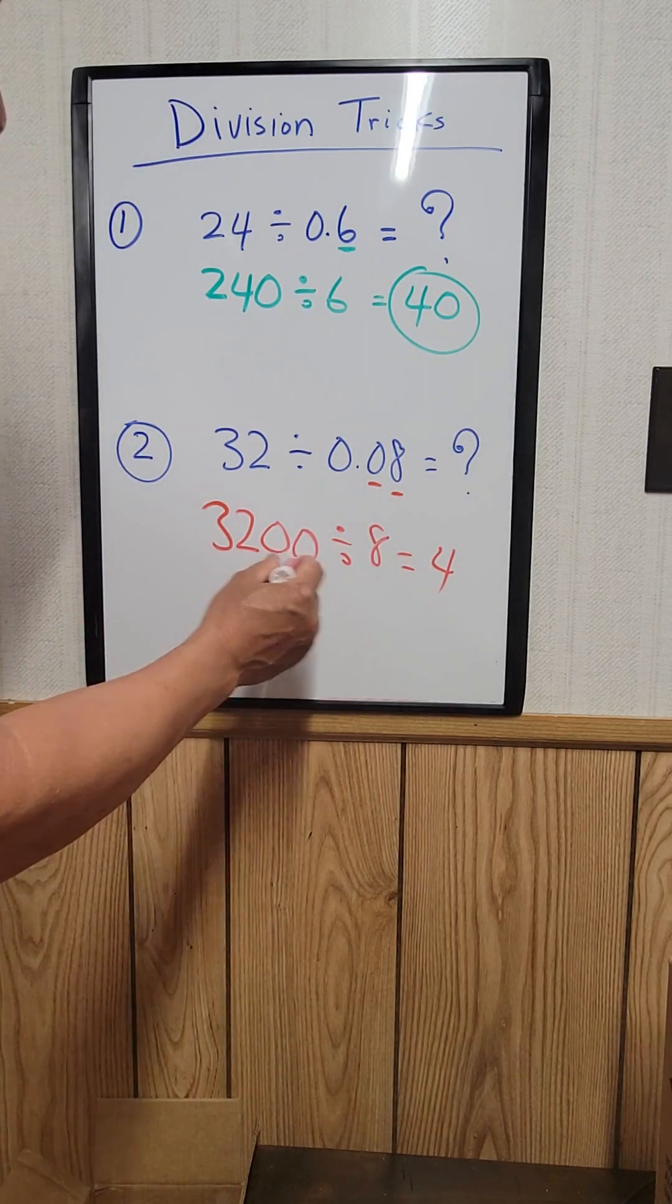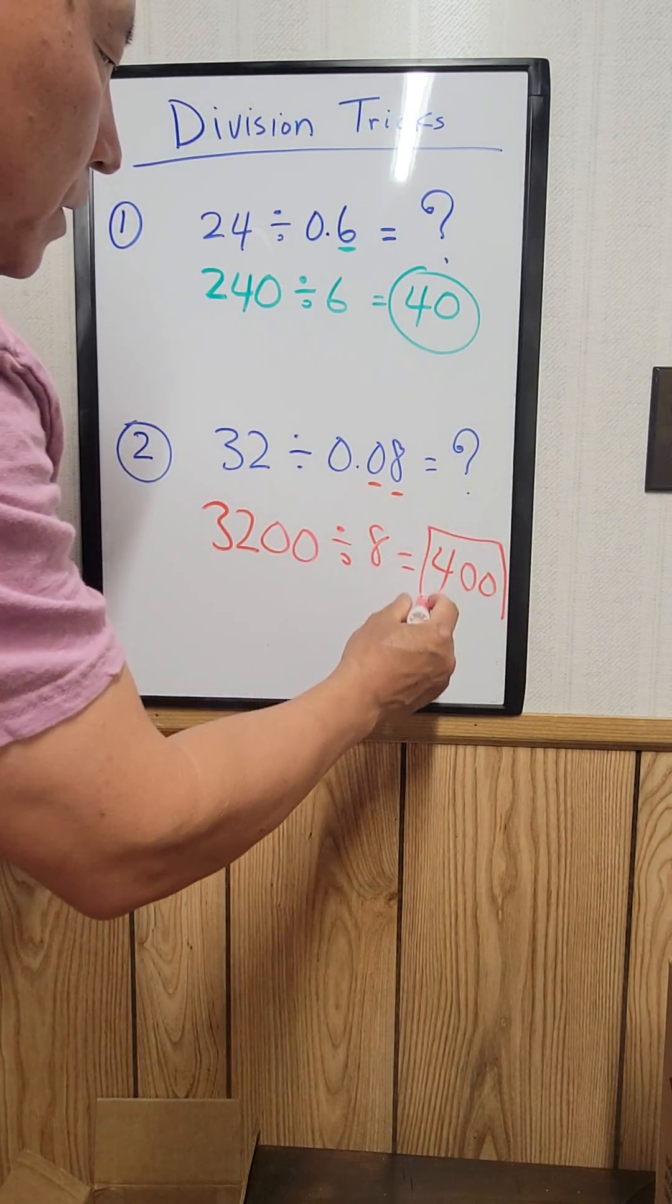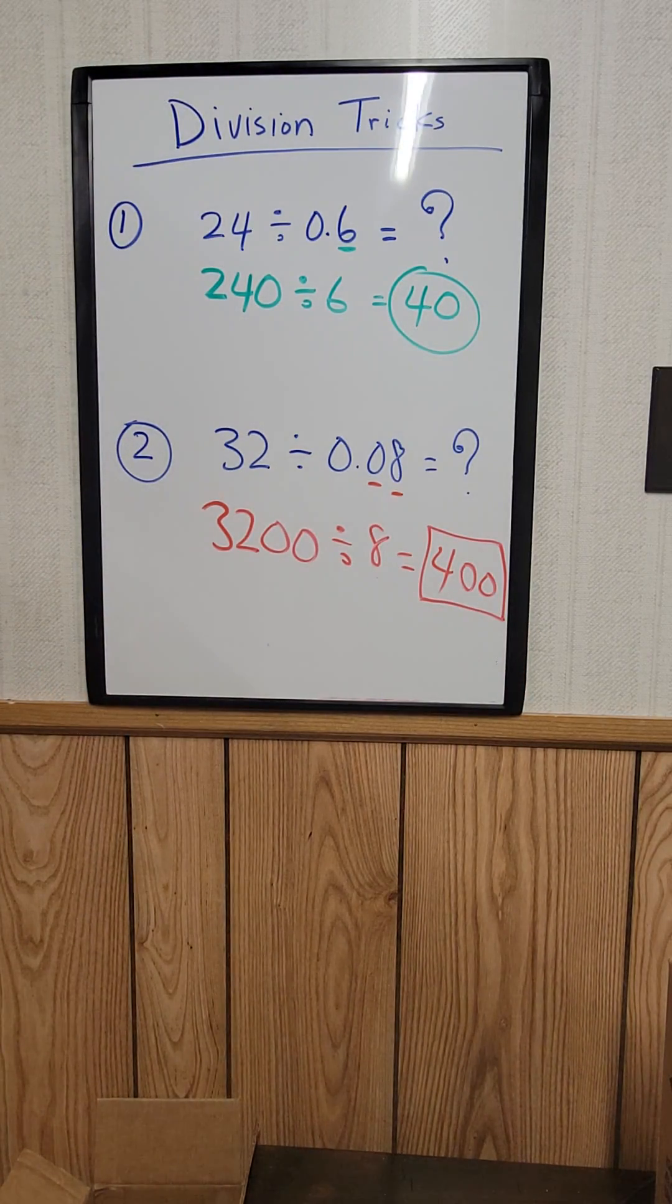4, then add the two zeros to get 400—that's your answer. Thank you very much for watching! If you like my videos, please like, share, and subscribe. Bye!